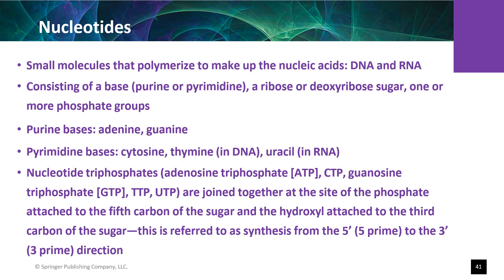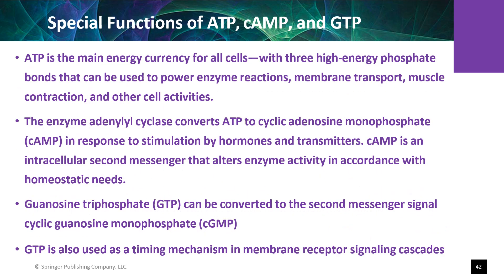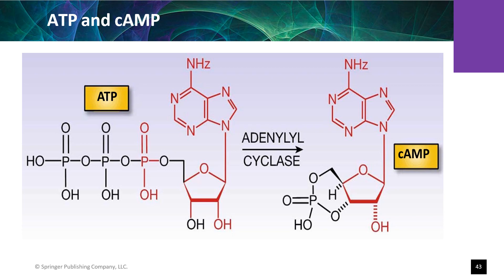Nucleic acids—DNA and RNA—are linear polymers of nucleotides that play a vital role in cell signaling cascades. ATP is the energy source for transportation between cells and is the main energy supply for cells. ATP is also a precursor of a second messenger known as cAMP.